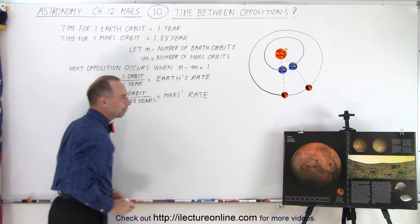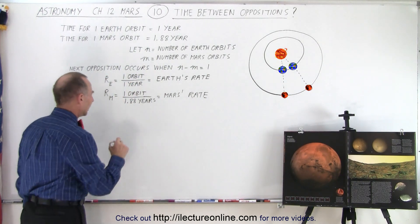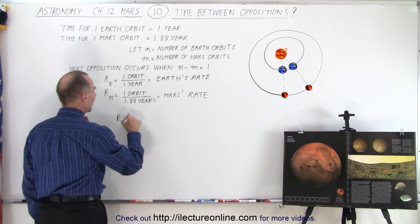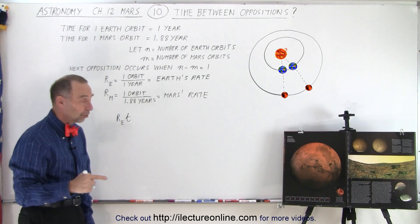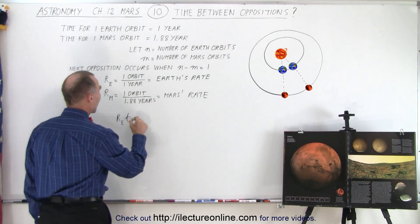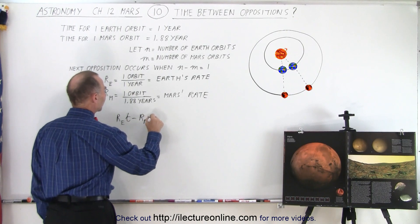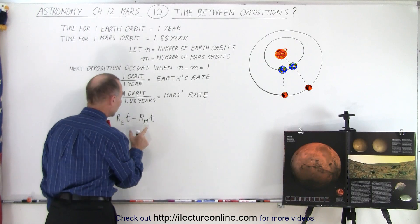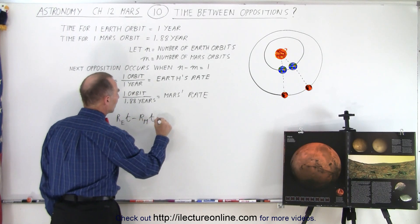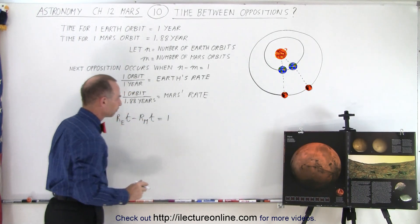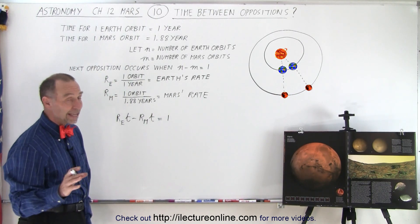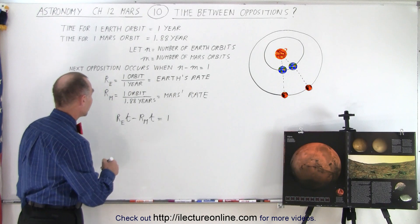So now we need an equation. What we can say here is that the rate of Earth times the amount of time that it takes to get to the next opposition, minus the rate of Mars times the time that it takes to get to the next opposition. So these two t's are equal to the same. The difference of that should equal 1. Now we have to solve that for t, for time.